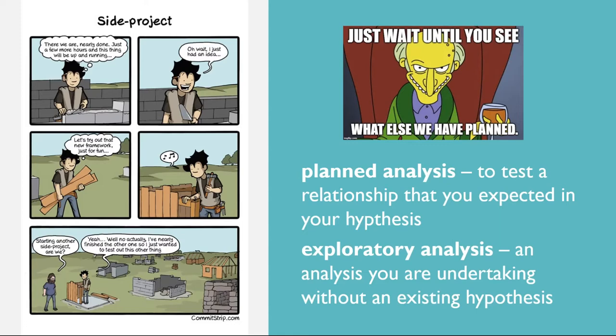Planned and exploratory analyses. Finally, you're ready to answer your primary research questions. When you designed your study, you might have had a hypothesis that a particular relationship might exist in the data. In this case, you would conduct a planned analysis to test the relationship that you expected. For example, if you expected a difference between group or condition means, you can compute the relevant group or condition means and standard deviations, make a bar graph to display the results, and compute Cohen's d. If you expected a correlation between quantitative variables, you can make a line graph or scatter plot, check for non-linearity and restriction of range, and compute Pearson's r.